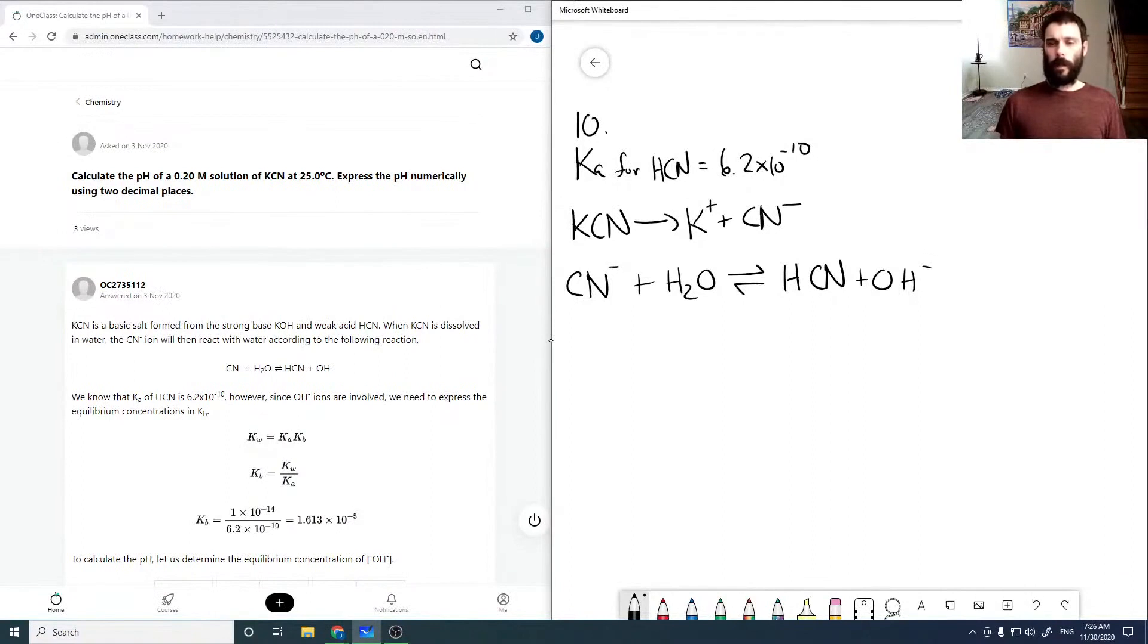Given the Ka for HCN, we can get the Kb, because the relation between Ka and Kb is Kw, where given a Ka for an acid, Kb is the equilibrium constant for the base.